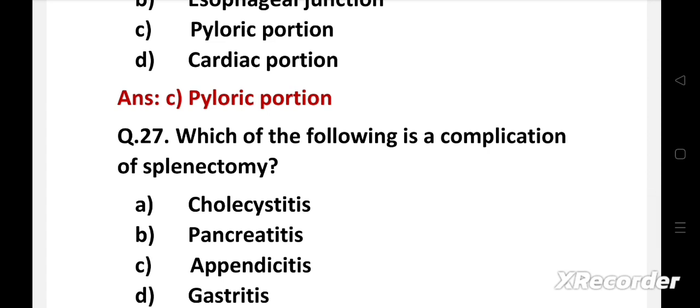Question 27: Which of the following is a complication of splenectomy? Option A: cholecystitis, B: pancreatitis, C: appendicitis, D: gastritis.